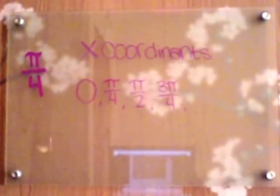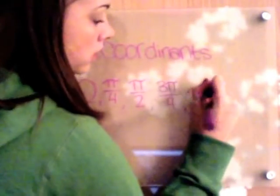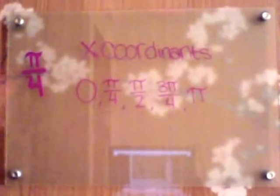Finally, we have 4π over 4, which reduces down to just simply π. Now we have our 5 x-coordinates.